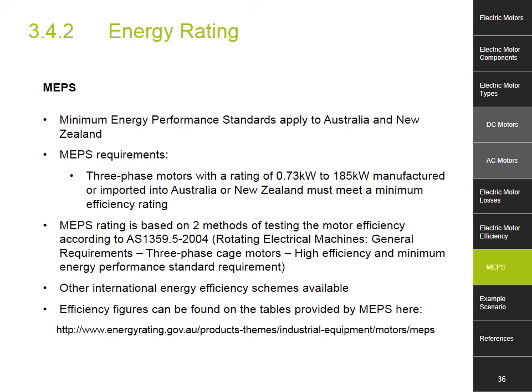Some motors are also subject to energy ratings. The Minimum Energy Performance Standards, or MEPS, apply to motors manufactured or imported into Australia or New Zealand. In particular, three-phase motors with a rating of 0.73 kW to 185 kW must meet the minimum efficiency ratings set by MEPS and the Australian standard AS1359.5. AS1359.5 outlines the two testing methods used to measure efficiency. There are other similar international energy efficiency schemes in place to upgrade the requirements of motors. The efficiency figures can be found on the tables provided by MEPS on their website.